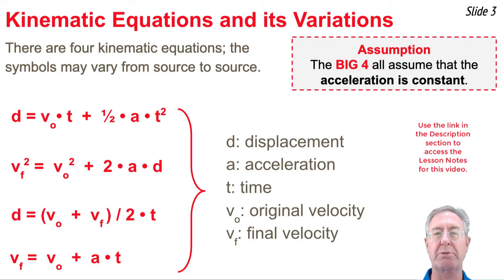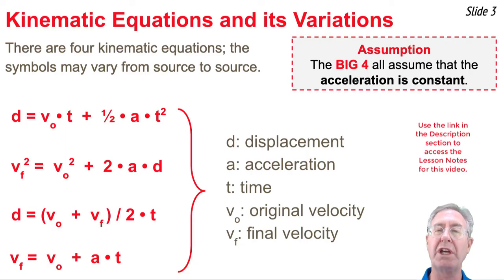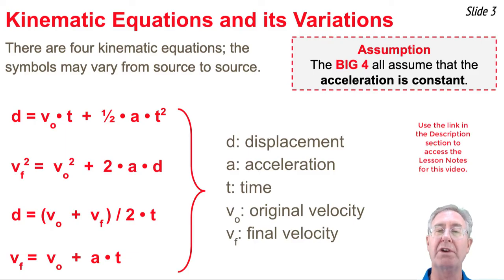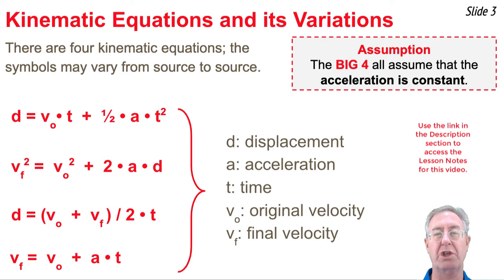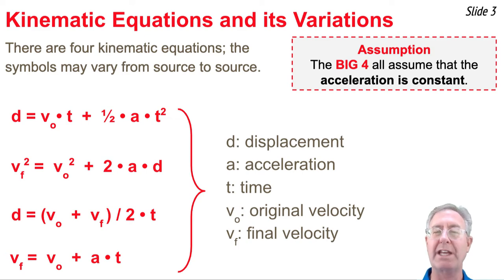One comment on displacement: it represents the overall change in position of the moving object. Our objects in this video are going to be moving up and down, so that's a vertical change in position. On occasion, a problem will ask to determine the height of the object — you need to know the original position and then add the change in position to that. That's how you find a final height.